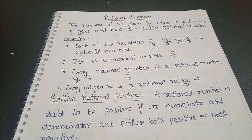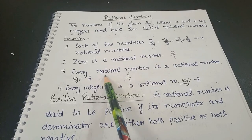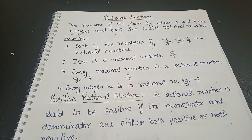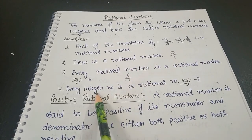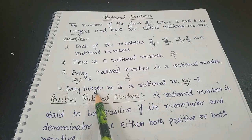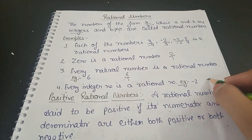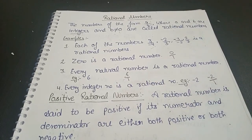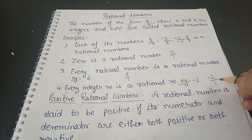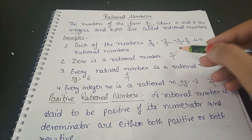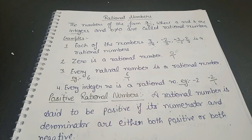Natural numbers are 1, 2, 3... and integers include positive natural numbers, negative natural numbers, and zero. For example, -2 is an integer, and we can write it as (-2)/1, which is in the a/b form. So -2 is also a rational number. Note that only b's value cannot be zero; a's value can be zero.